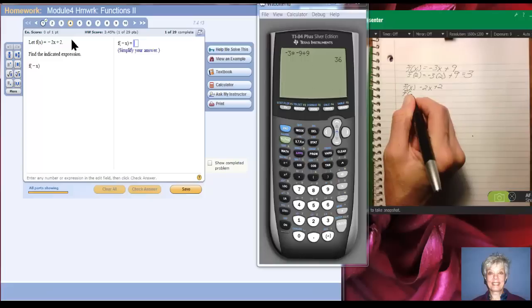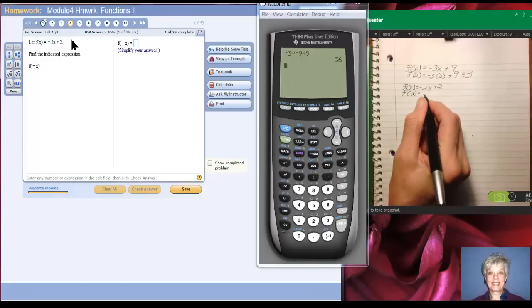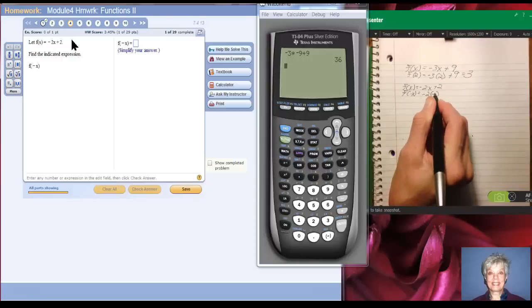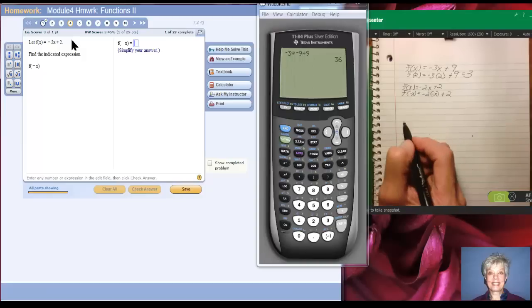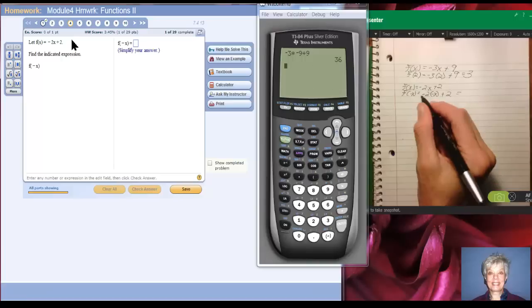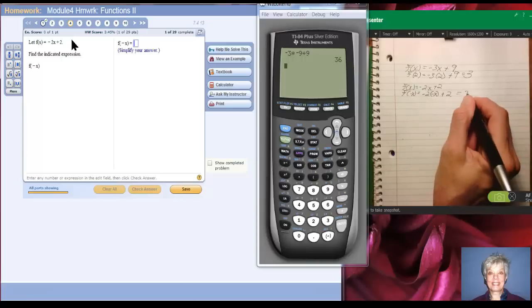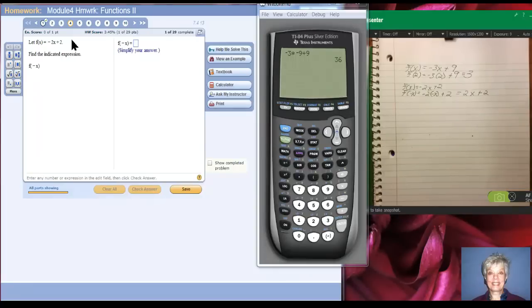We know that f of x equals negative 2x plus 2. So f of negative x is going to equal negative 2 parentheses, negative x plus 2. I put this negative x in for the positive x right there. Now, what's that going to equal? Negative 2 times negative x is going to be positive 2x plus 2. So I'll hazard a guess. It's 2x plus 2. Let's see if I'm right. Good job. Notice there's no x in the second term, right? So I can't go sticking a negative x in there.